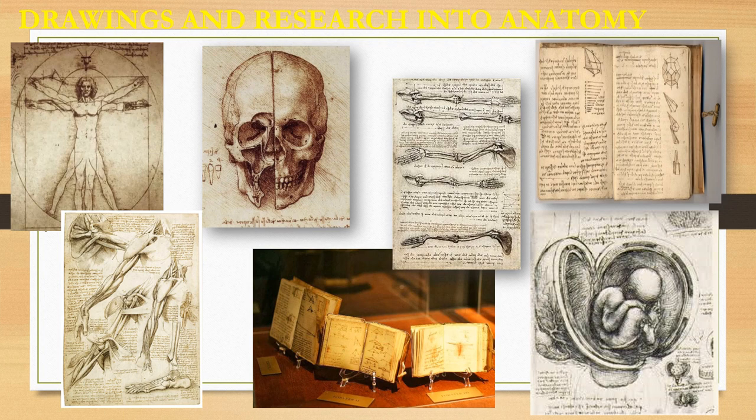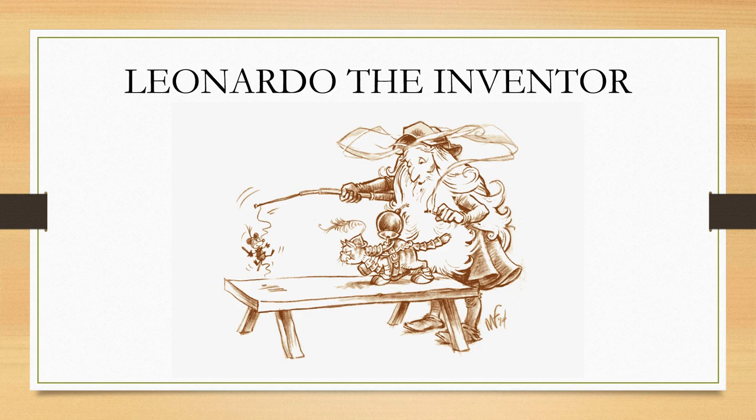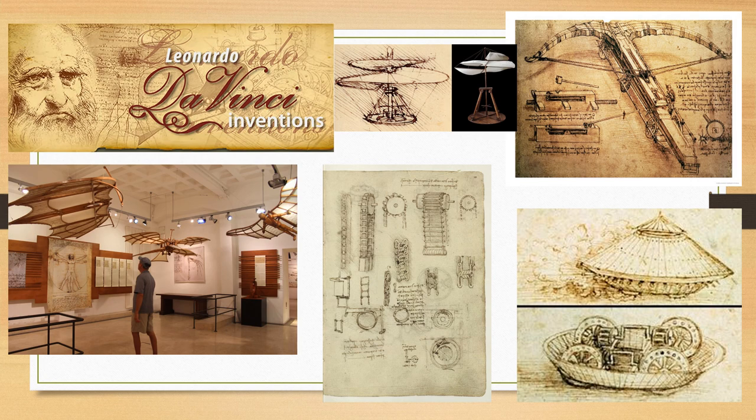Leonardo the Inventor and Scientist. Many of da Vinci's drawings and journals were made in his pursuit of scientific knowledge and inventions. His journals were filled with over 13,000 pages of his observations of the world. He drew pictures and designs of hang gliders, helicopters, war machines, musical instruments, various pumps and more. He was interested in civil engineering projects and designed a single-span bridge, a way to divert the Arno River, and movable barricades to help protect a city in the case of attack.